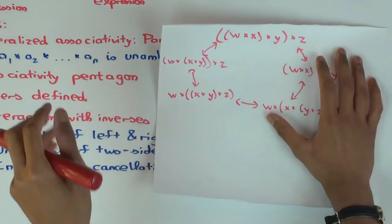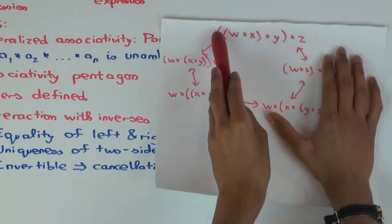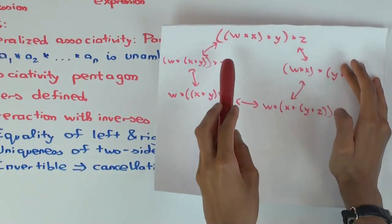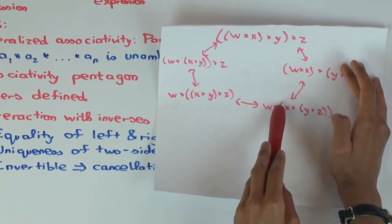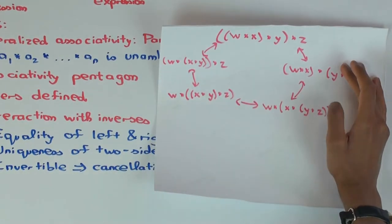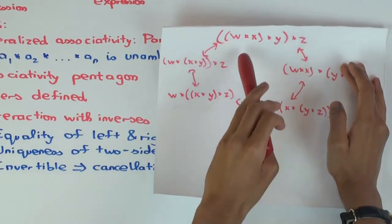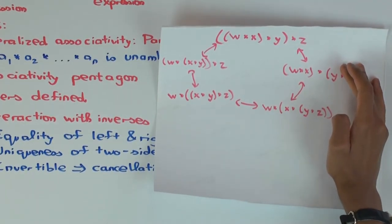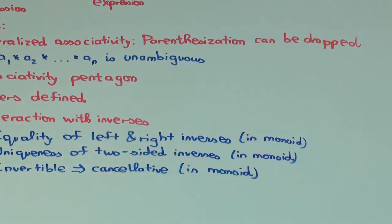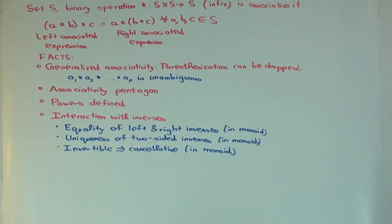What's the shape? It's a pentagon. That's what they call the associativity pentagon. So when you have a product of four things, there's actually a bit of redundancy into how the associative law works. There's sort of more than one way of getting from one form to another. Generalized associativity, the associativity pentagon is sort of a bonus.